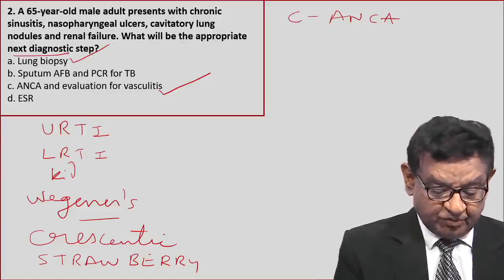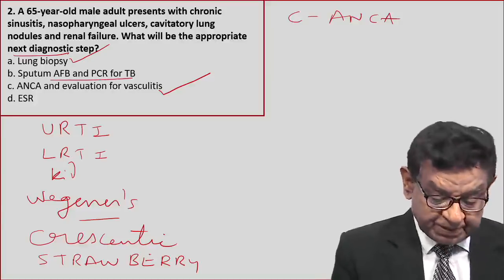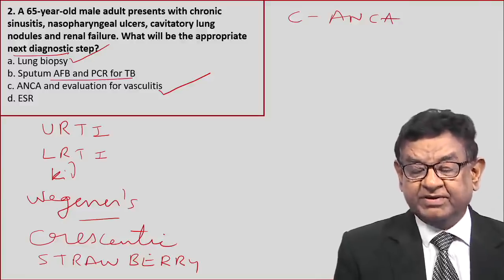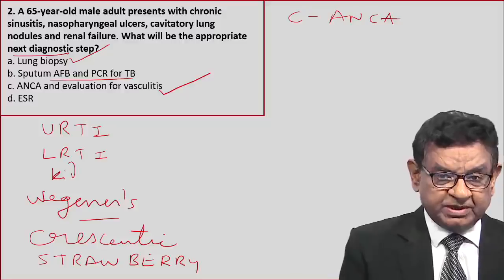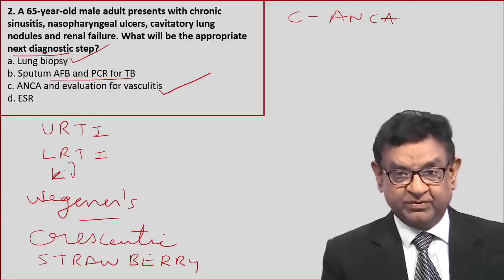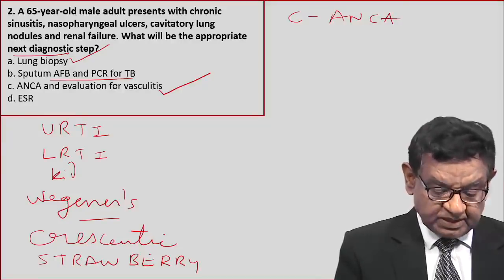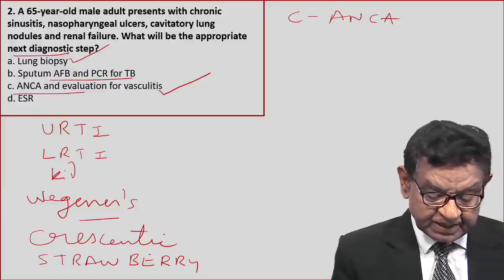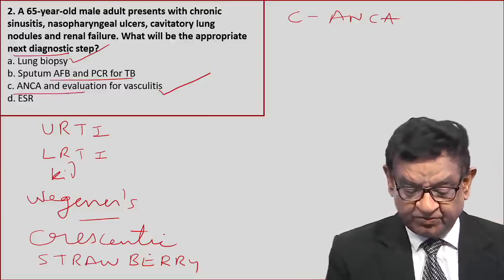Regarding sputum with AFB: in TB there is a cavitary lesion, but in case of TB, renal involvement is usually not a feature and sinusitis is usually not a feature. So the best answer of this question is C — ANCA evaluation for vasculitis, which is a small vessel vasculitis.